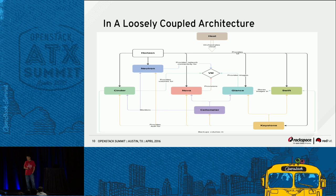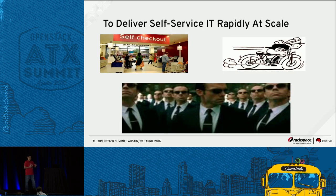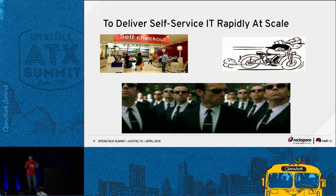We're going to go through all these components and identify how they interact with one another. The goal of OpenStack is to allow developers to create applications on a platform they can self-service, rapidly scale, and build on. That is fundamentally what OpenStack is designed to do — let developers move really fast and grow applications to scale.